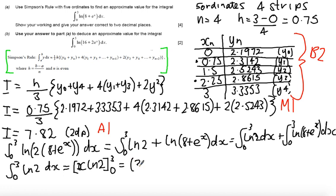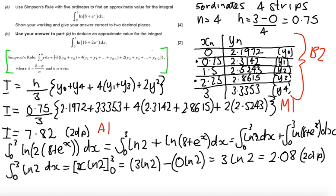When I evaluate this, I get 3 log 2 minus 0 log 2. So I get an answer of 3 log 2, which you can give as 2.08. Our previous answer was to 2 decimal places, so let's give this answer here as 2 decimal places as well.